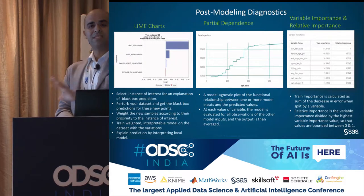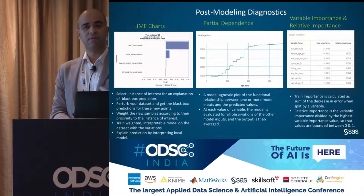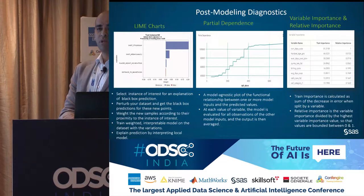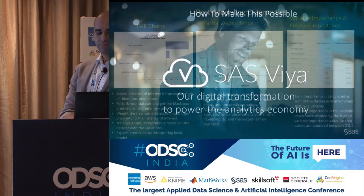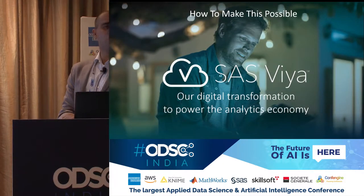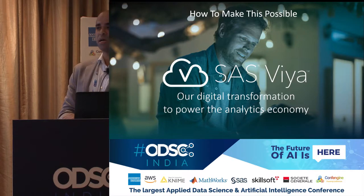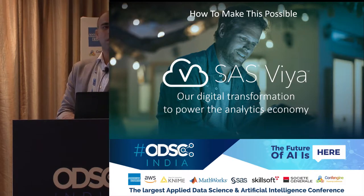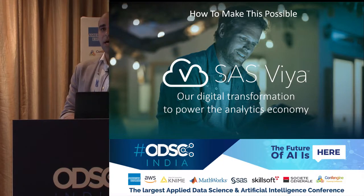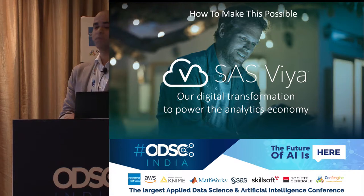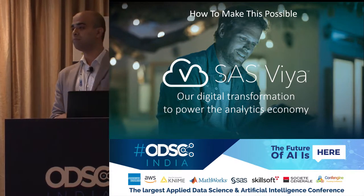From a SAS perspective, how do we make all of this possible? I talked about a lot of theoretical concepts — partial dependence charts, LIME charts, ICE plots. How do we make this possible? It's an evolutionary transformation of SAS, which is what we are naming SAS Viya.